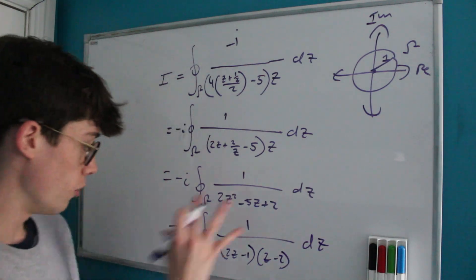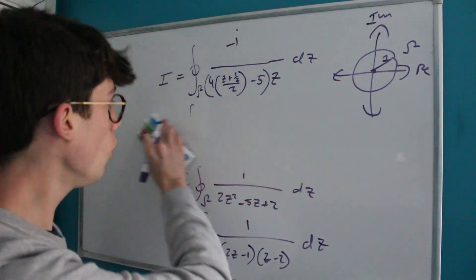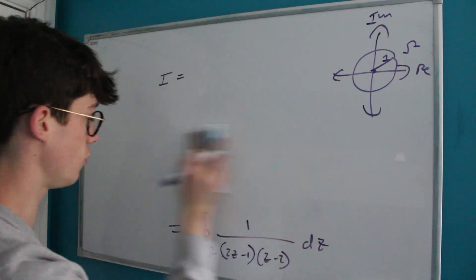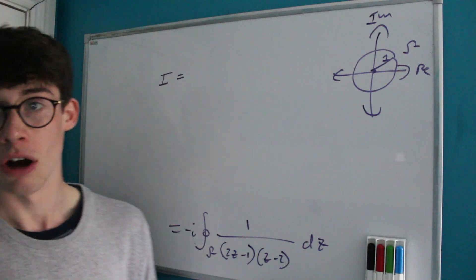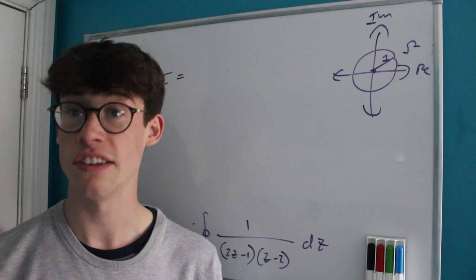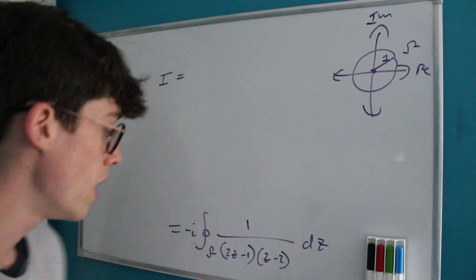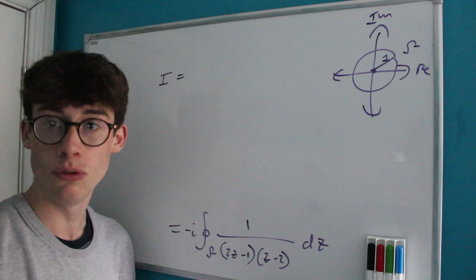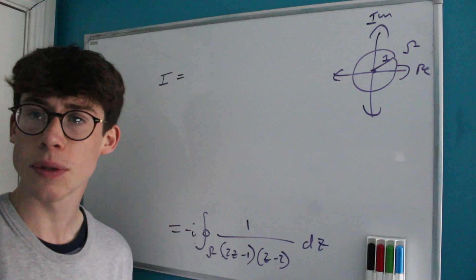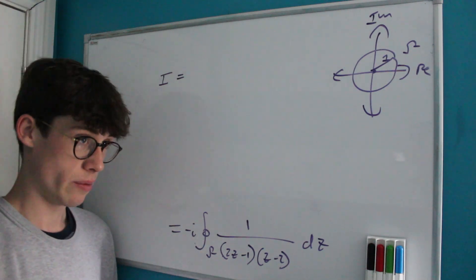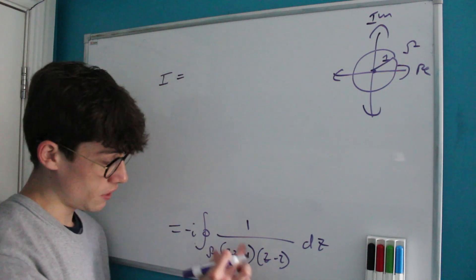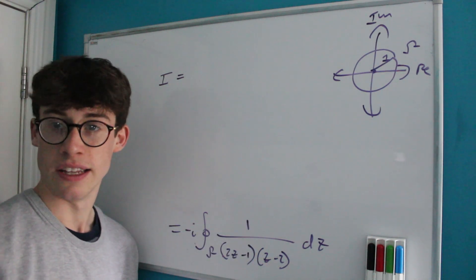Now this is a quadratic everybody should be able to factorise. And of course this will factorise to 2z minus 1 times z minus 2 with respect to z. Okay, great. So this is our integral. And what makes the magic really happen with solving trig problems like this is Cauchy's residue theorem, which of course says that the integral around a closed contour is equal to 2πi multiplied by the sum of the residues contained within that contour.